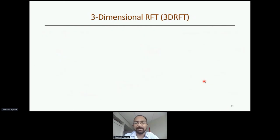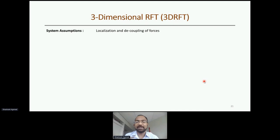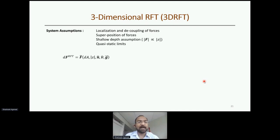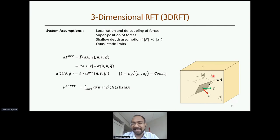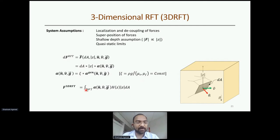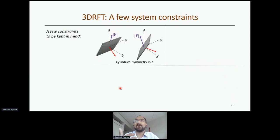We also developed a three-dimensional form of RFT, extending the 2D formulation into 3D. Instead of line elements, we use plate elements, and each plate element is characterized by its normal component, velocity direction component, depth, and area. Using these four parameters you can find forces on individual plate elements. The form of alpha again takes the same form as before — a scaling coefficient and a generic value — and the net force on the object is obtained by superposition of forces over all subsurfaces.